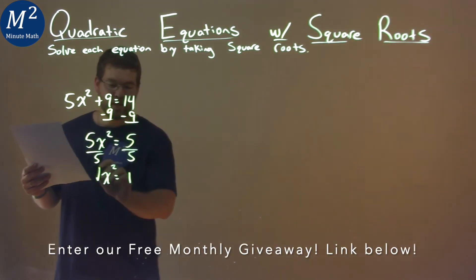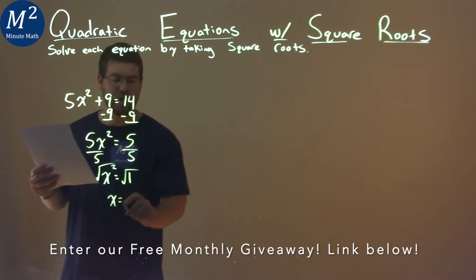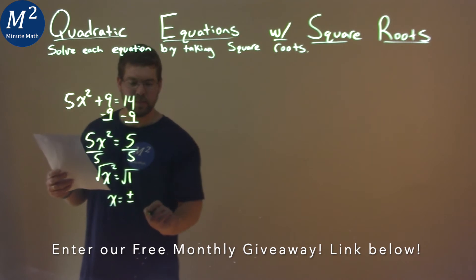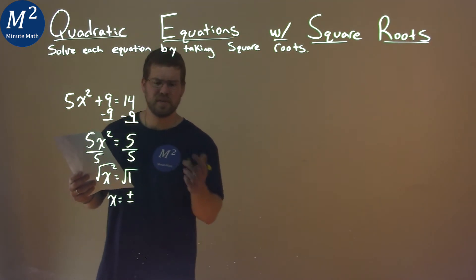Get rid of the square, take a square root of both sides. We have x equals, and when we take a square root of both sides, we have to do a plus or minus. And the square root of 1, what's that? That's just 1.